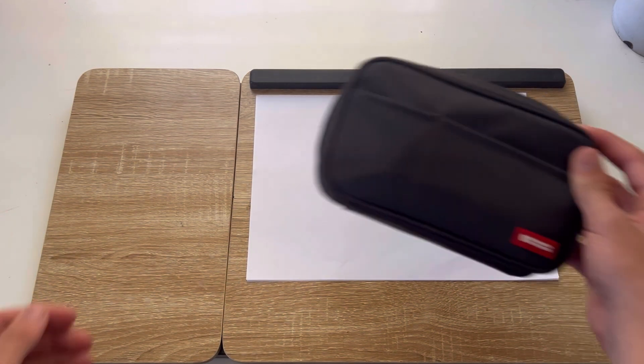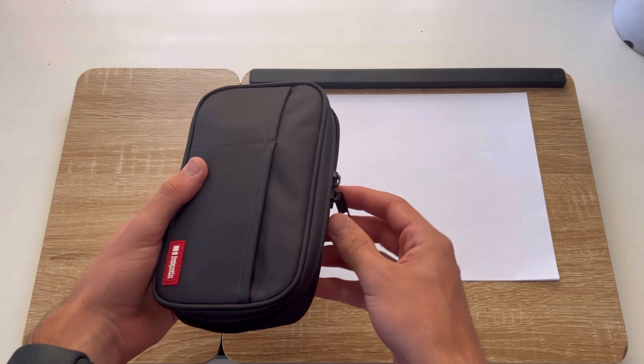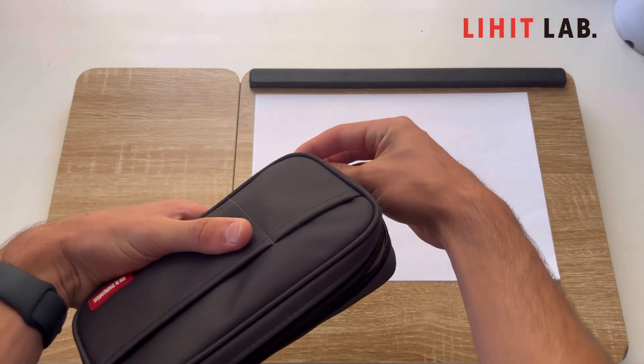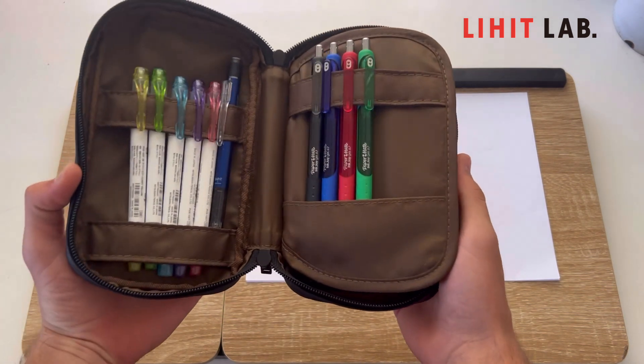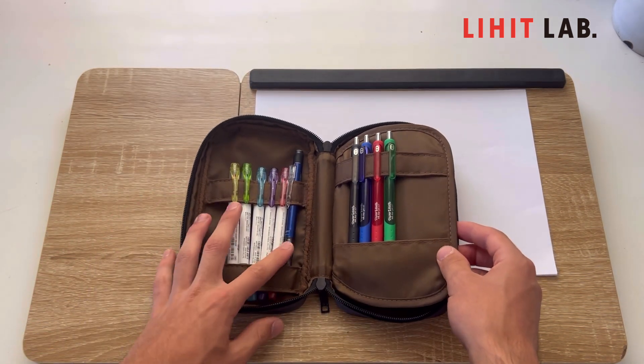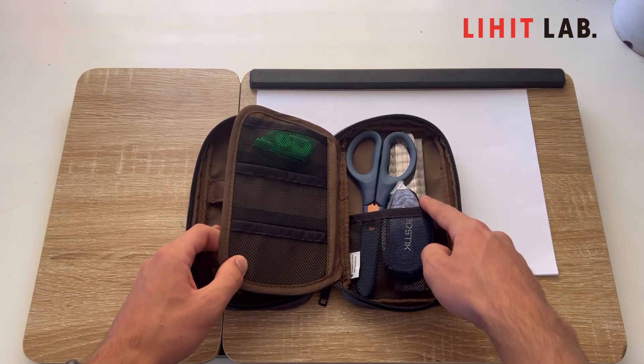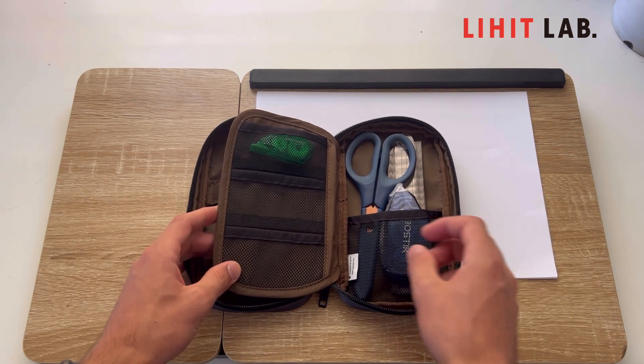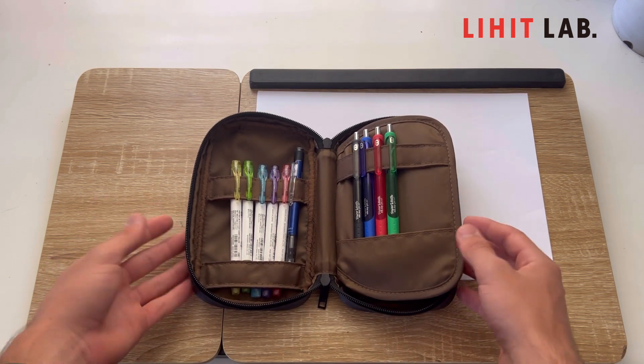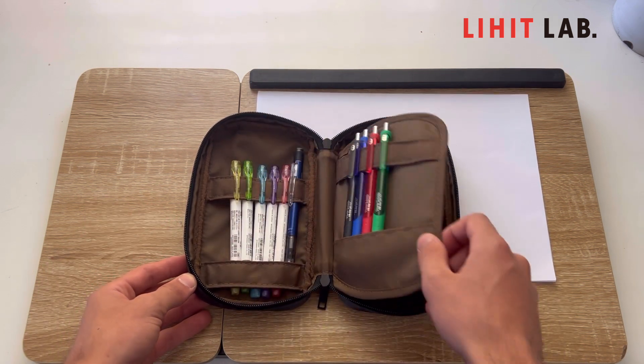Starting off with my pencil case. This is the A7551 zipper pencil case from LitLab. I use this Japanese pencil case every single day, and the only downside that I can find is that it cannot fit a standard 30 centimeter or 12 inch ruler, but we'll get back to that later. This is a book style pencil case that opens, as the name suggests, like a book.